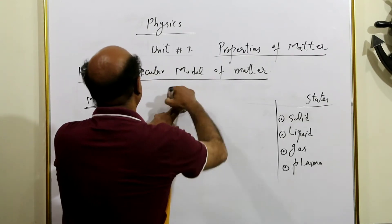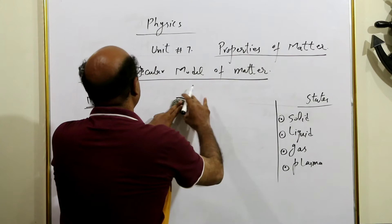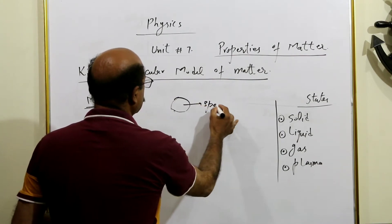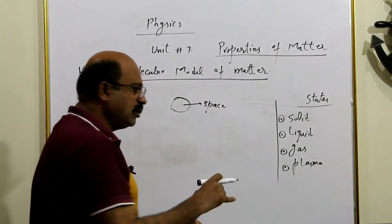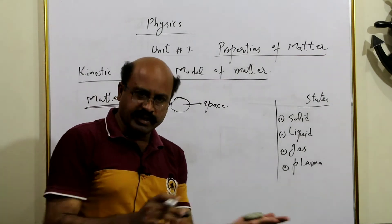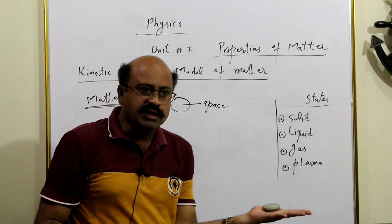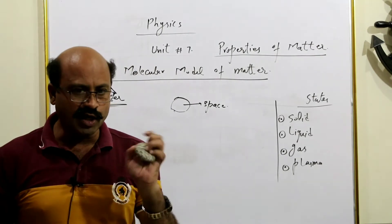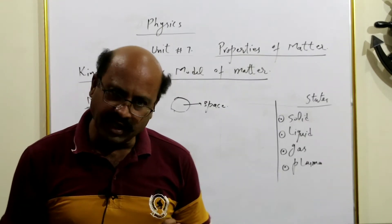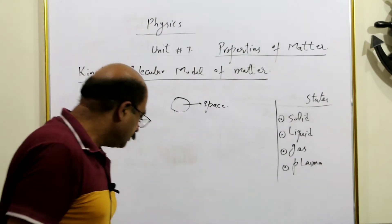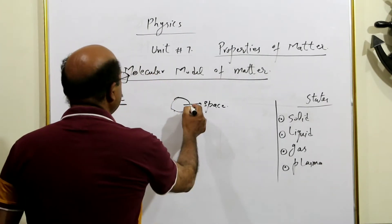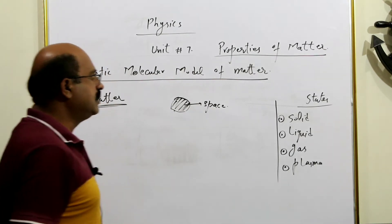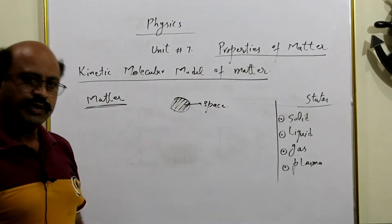So this is the space. If I put it on a physical balance, it will give me a value — this is the mass. So, anything which has some mass and occupies some space will be named as matter.